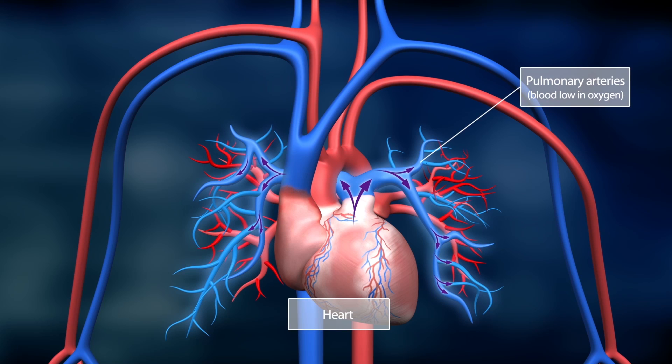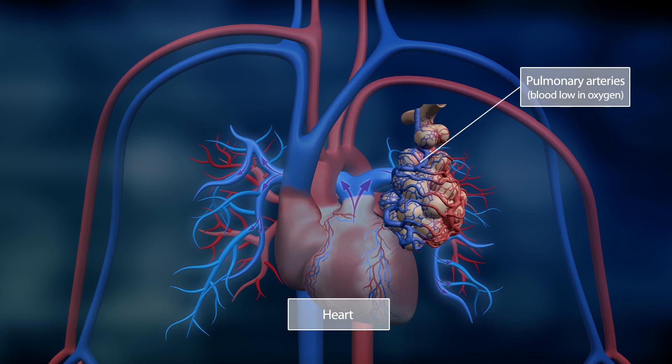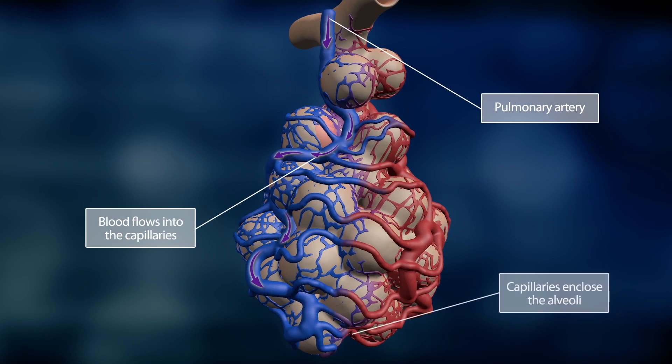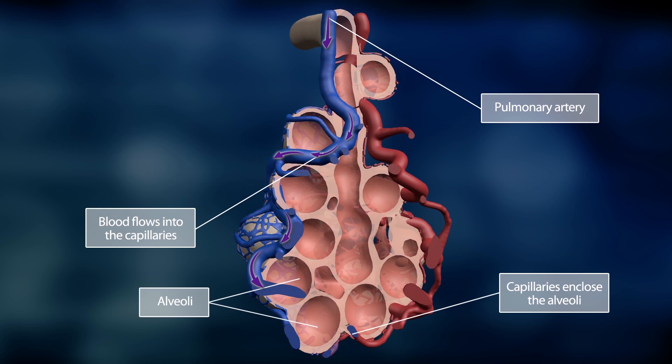The pulmonary arteries branch out in a mesh of tiny blood vessels called capillaries. This capillary network surrounds round air sacs called alveoli. They look like grape bundles hanging on the ends of the bronchial tubes.